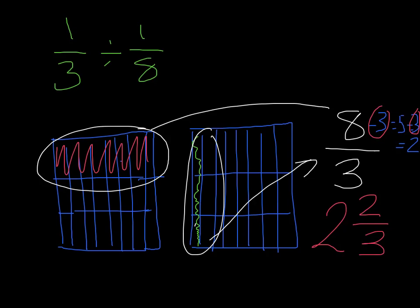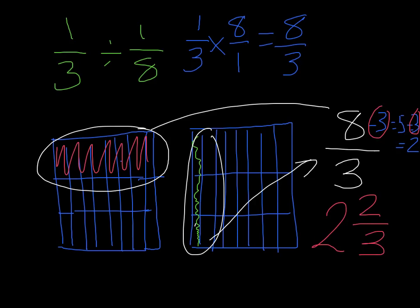Using the method you know: I leave 1 third the same, put a multiplication sign, and find the reciprocal of the second fraction. So 1 times 8 over 3, and following the same steps, you would get 2 wholes and 2 thirds — the exact same answer.